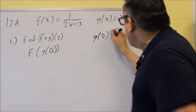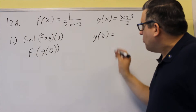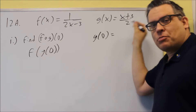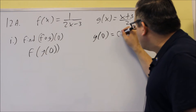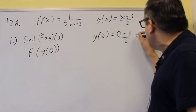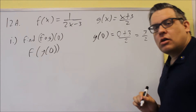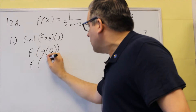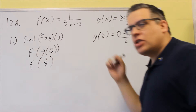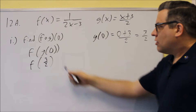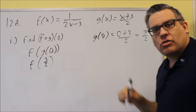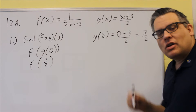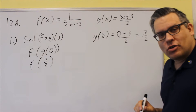Let's first do g of 0. So g of 0 means we've got to put a 0 into the g function in place of x. So we're going to do 0 plus 3 over 2, and we get 3 halves. Now we've done g of 0 and got 3 halves, so our problem turns into f of 3 halves. Once we find f of 3 halves, that's going to be our answer for f of g of 0.